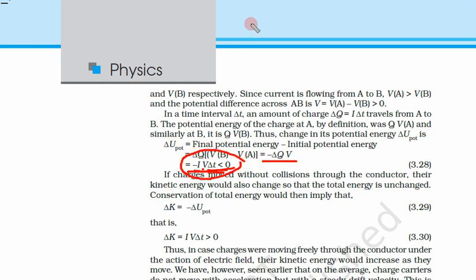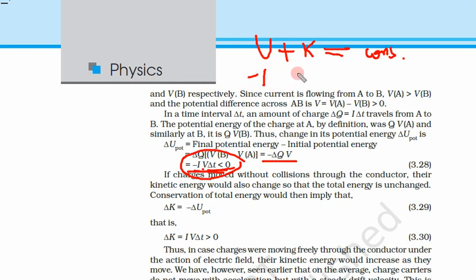For a conservative system, potential energy plus kinetic energy is always constant. So if potential energy is decreasing, kinetic energy must increase by the same amount. If potential energy decreases by 1 joule, kinetic energy increases by 1 joule. The change in kinetic energy is delta K = minus delta U.